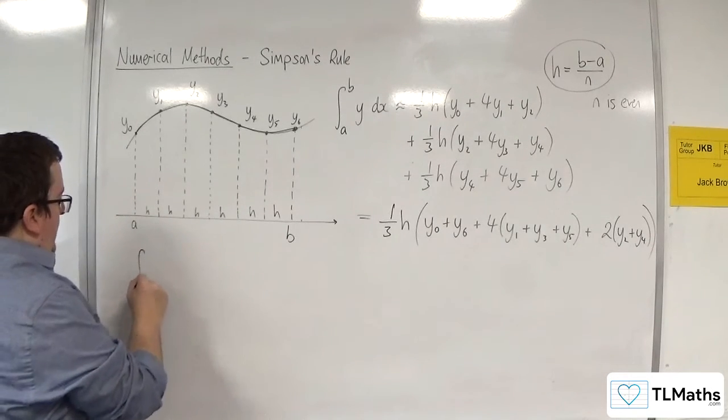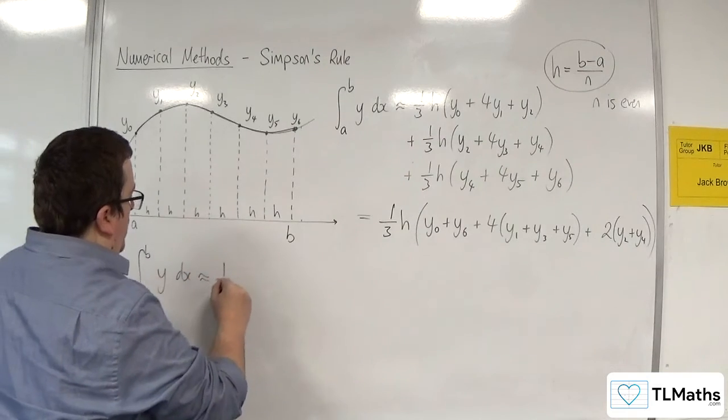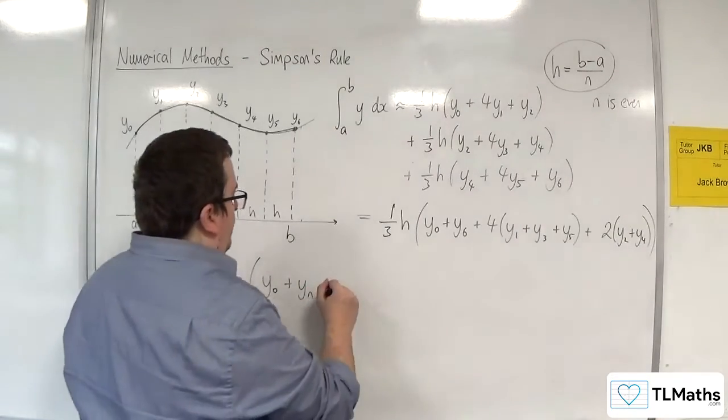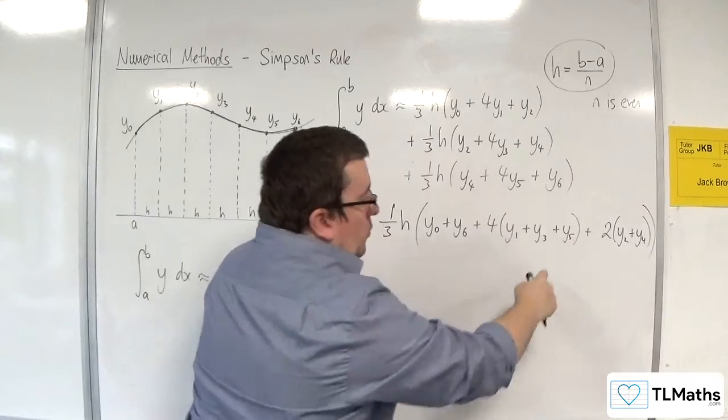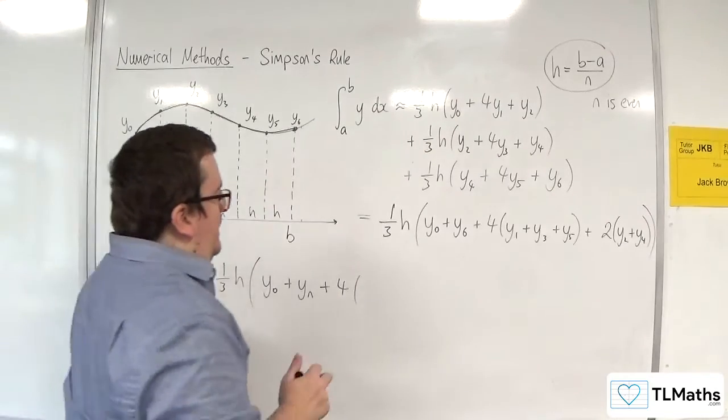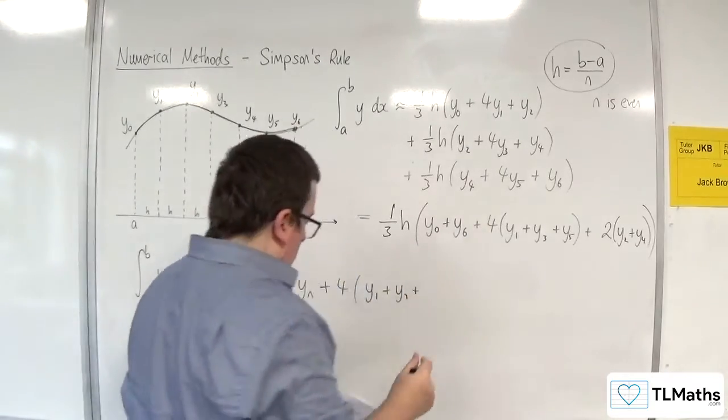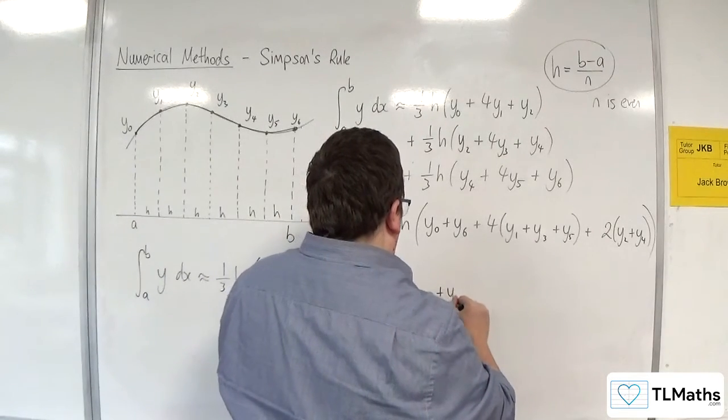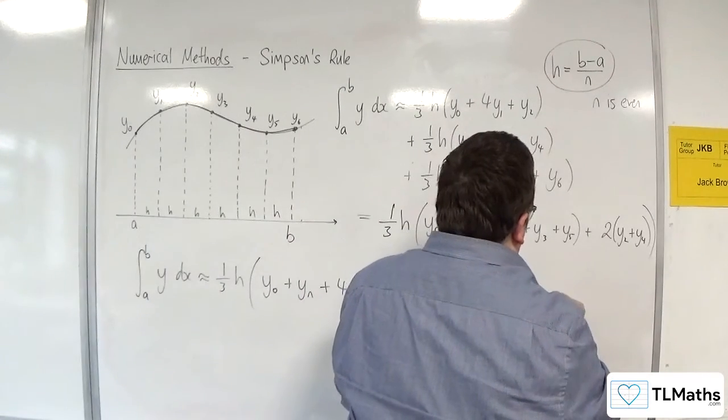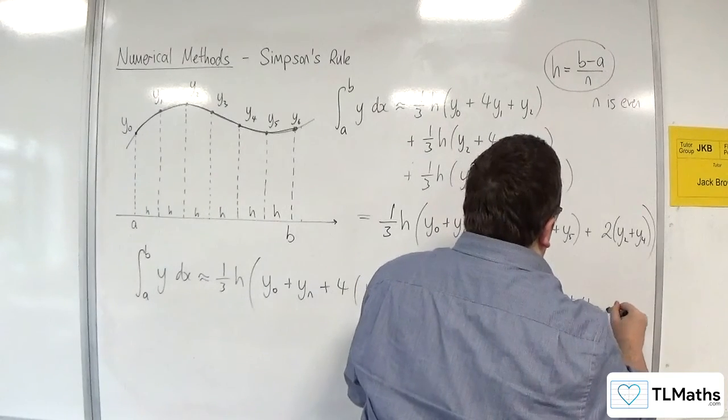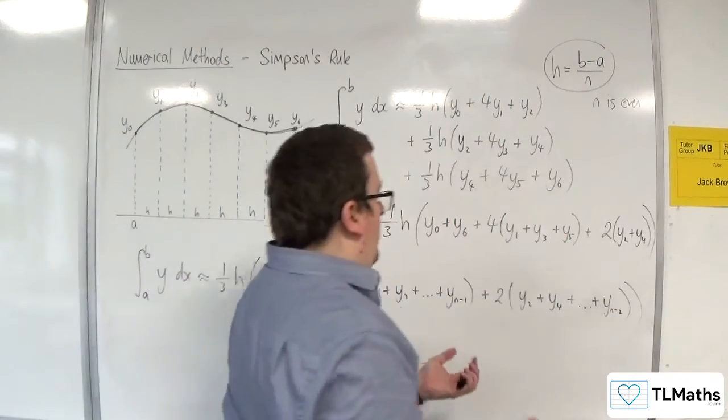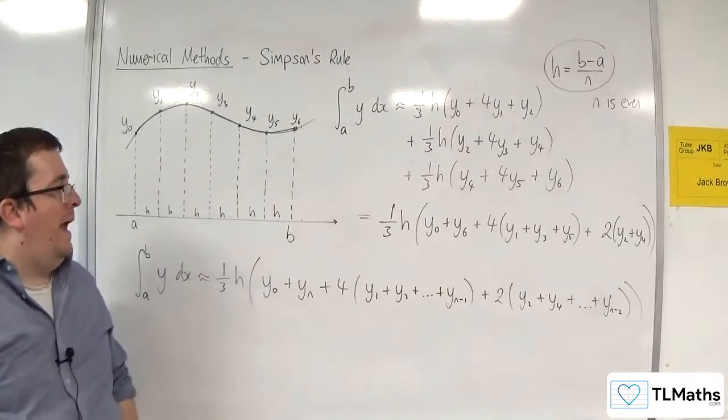So, the integral between a and b of y dx is approximately equal to one third h times by, you've got the first plus the last, then four lots of the y's with odd ordinates. So, the odd ordinates go in there. So, y1 plus y3 plus, and they're going to use yn minus 1. And then, two lots of all the even ones. So, y2 plus y4 plus yn minus 2. And so, that is Simpson's rule. And that's where it comes from.